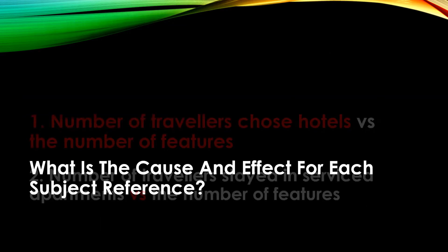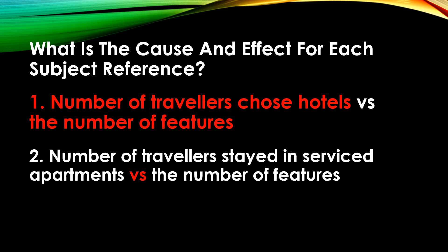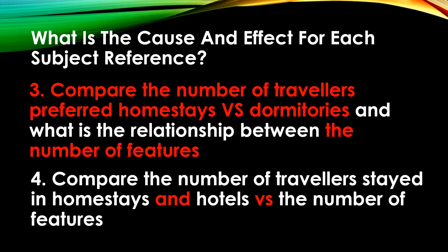This is the question. Now we shall look at what the relationships are between the cause and effect for each subject reference. Number one: the number of travelers who choose hotels versus the number of features. Number two: the number of travelers who stayed in service apartments versus the number of features. Another cause and effect: compare the number of travelers who preferred homestays and the number of travelers who preferred dormitories, and find out what is the relationship between the number of features.